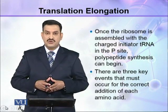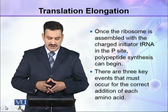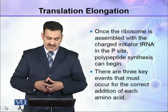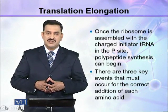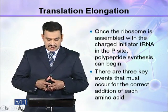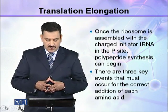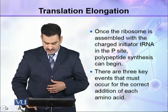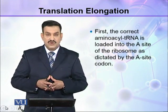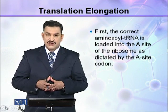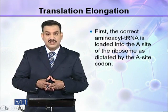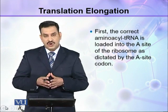Once the ribosome is assembled with the charged initiator tRNA in the P-site, polypeptide synthesis can begin. There are three key events that must occur for the correct addition of each amino acid. First, the correct aminoacyl tRNA is loaded into the A-site of the ribosome as dictated by the A-site codon.